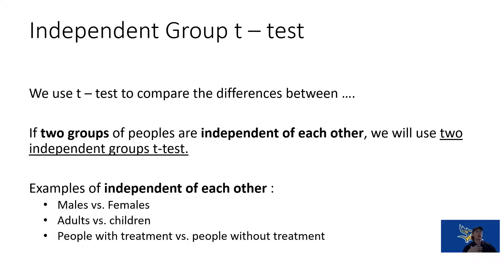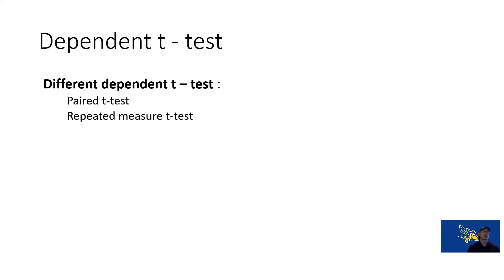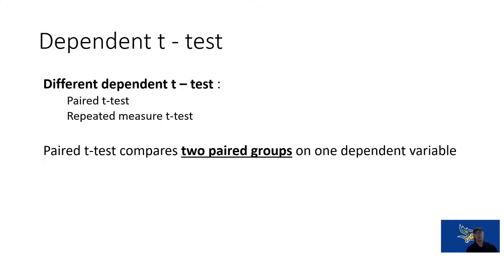An Independent Group T-Test is what we talked about last week. This is when we're comparing two groups that are independent of each other — different populations or different groups. A Dependent T-Test, Paired T-Test, and Repeated Measure T-Test are all the same statistical analysis.